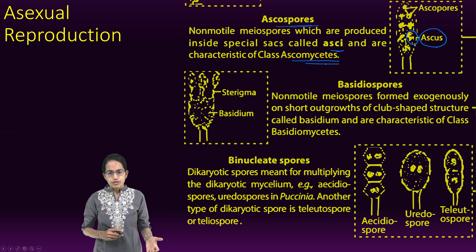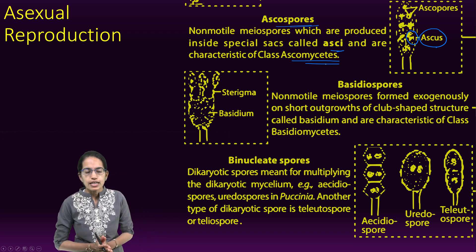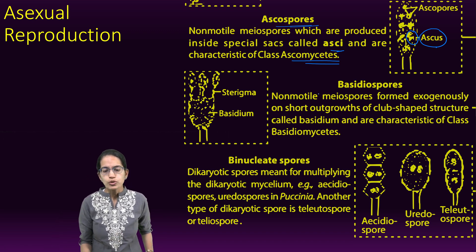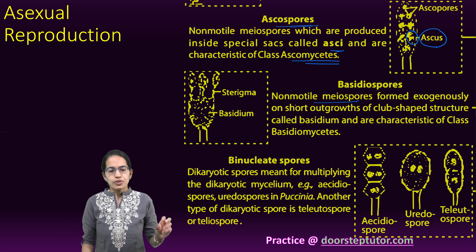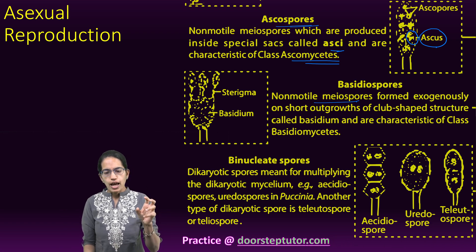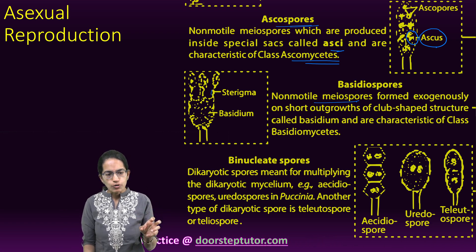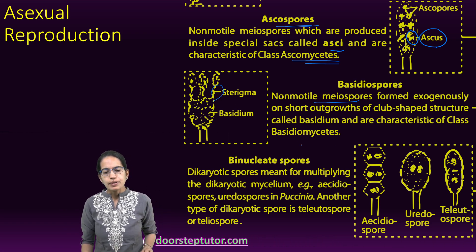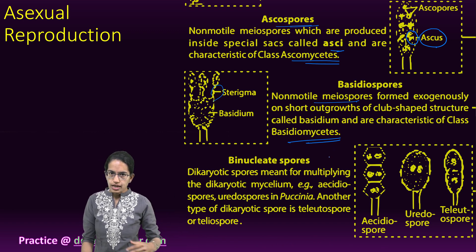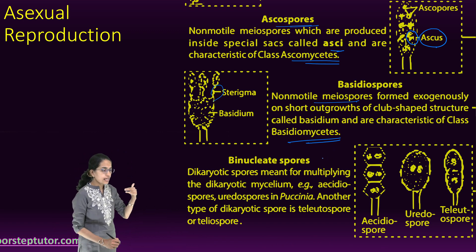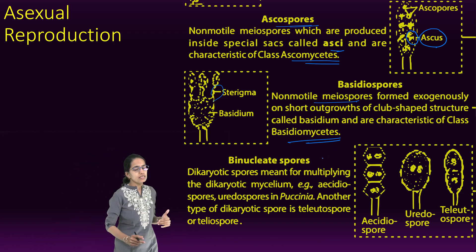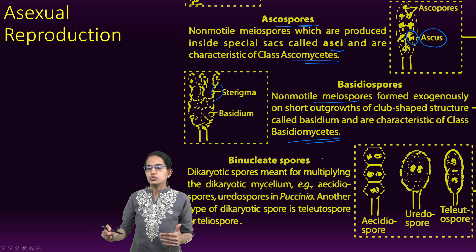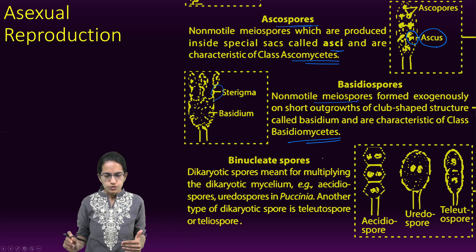The next is Basidiomycetes. Again, non-motile spores are seen. They are exogenously formed as an outgrowth, and Basidiomycetes — the class of fungi, as we have understood in our classification — reproduces through basidiospores.